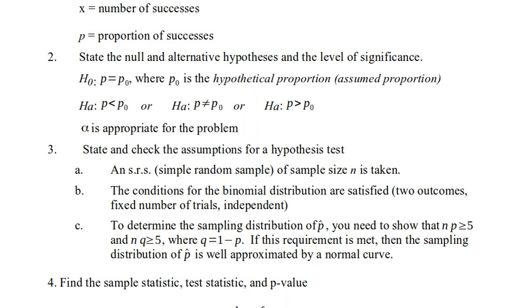Our alternative hypothesis could be one of three things. Either we claim that the true population proportion is less than the population proportion that we've been told, that they're simply not equal, or that the population proportion is greater than what we've been told. And then again, we use our discussion of type 1 and type 2 tests to determine an appropriate value for alpha.